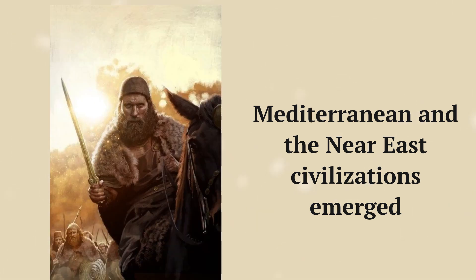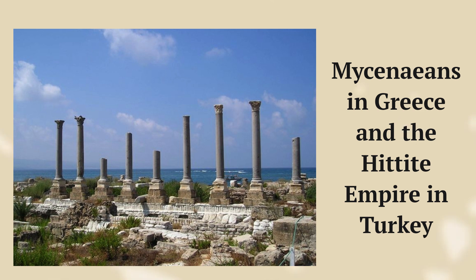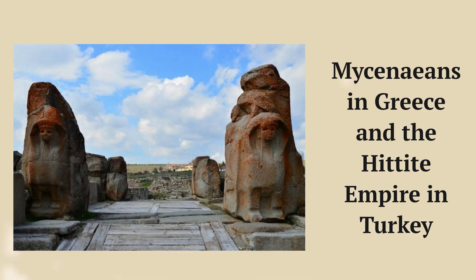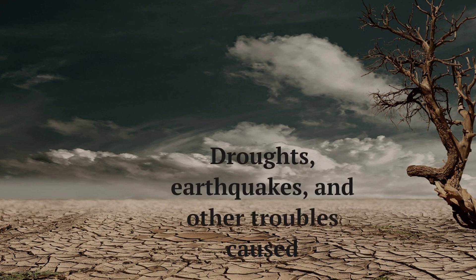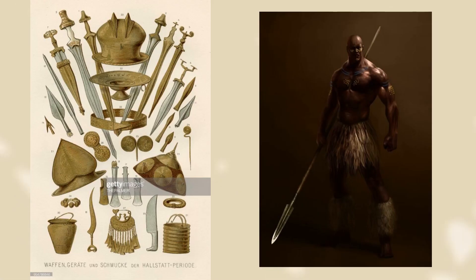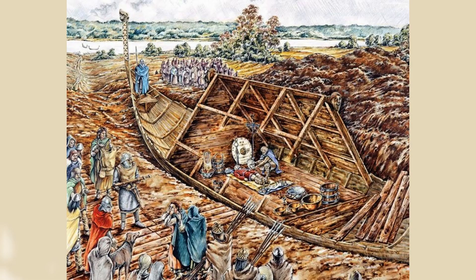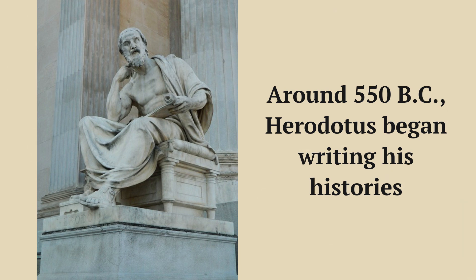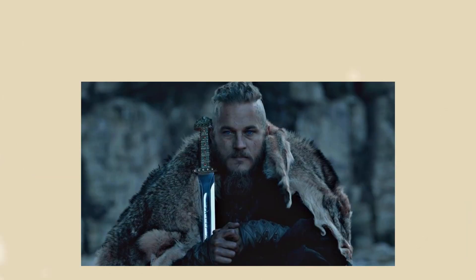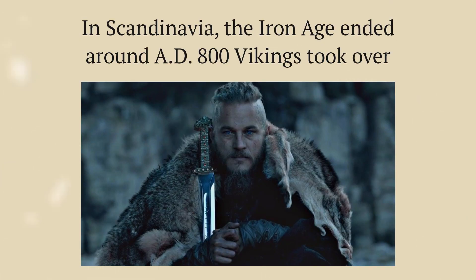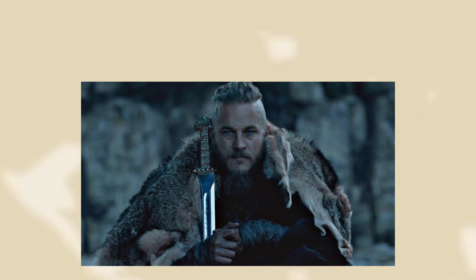The Mediterranean and the Near East were buzzing with activity. The Mycenaeans in Greece and the Hittites in Turkey were prominent, but troubles like droughts and earthquakes caused disruptions. The Iron Age didn't end everywhere at the same time — it had its conclusion at different moments across the globe. Herodotus started writing his historical tales around 550 BC. In Scandinavia, the Vikings wrapped things up around AD 800, and there was also the epic clash with the Roman Empire in Western and Central Europe.